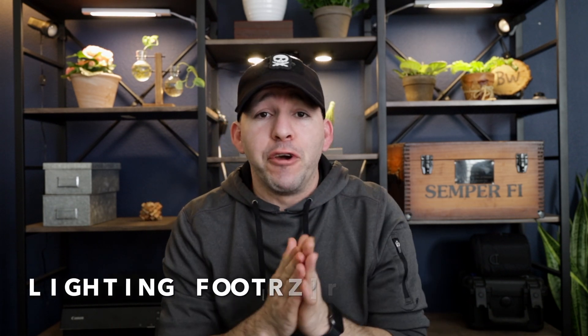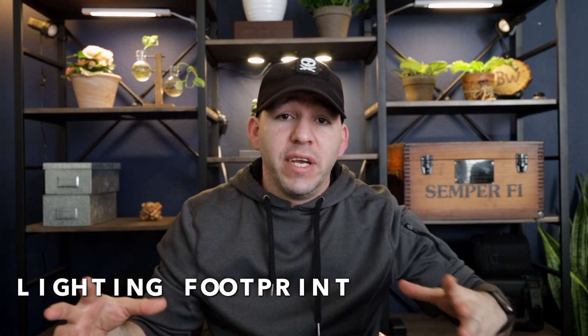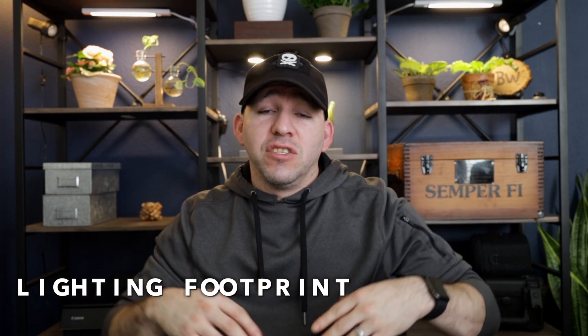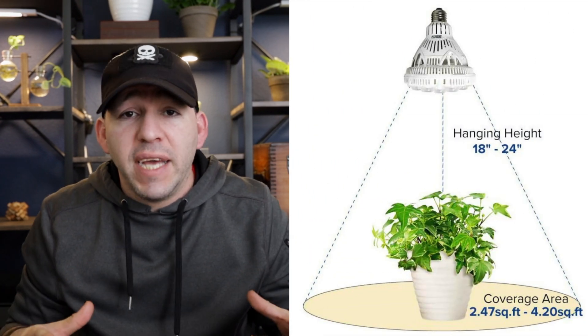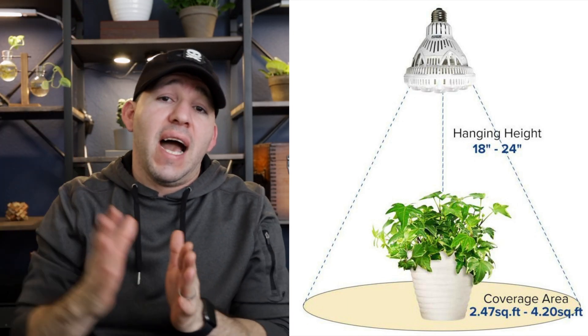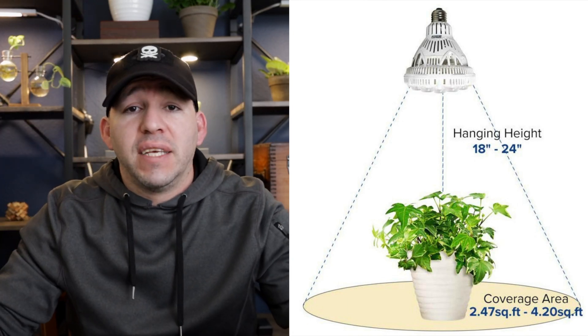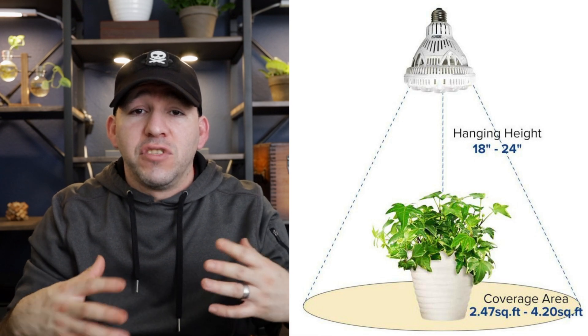Moving on to lighting footprint — grow lights are designed to cover a specific growing area. A lot of these lights advertise a two or three square foot space at three to about six feet high. Growing outside of that space is going to give you subpar results and you're not going to get what you need out of those plants.